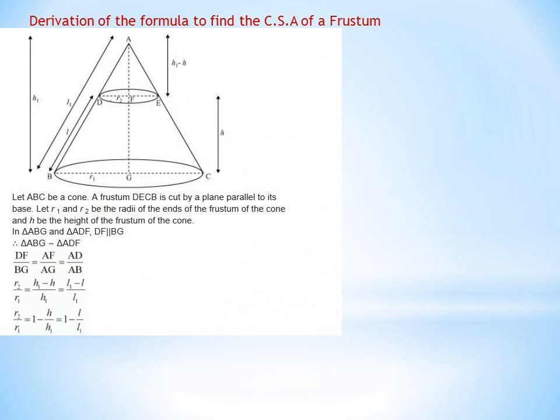There is a bigger cone ABC which has been cut by a parallel plane DFE, where DFE is parallel to BGC, forming a new frustum DECB. Let L be the slant height of the frustum, H the height, R1 the radius of the base, and R2 the radius of the smaller circular face. Let H1 be the height and L1 the slant length of the full cone. Then H1 minus H gives the height of the upper smaller cone, and L1 minus L gives its slant length.